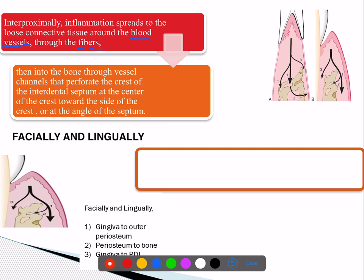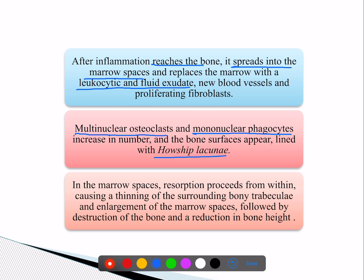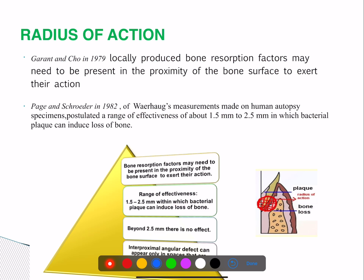The inflammation is transmitted through blood vessels which supply the bone. Once it reaches the bone, it spreads into the marrow spaces and replaces the marrow. The entire healthy marrow is replaced by leukocytic and fluid exudate. Multinuclear osteoclasts and mononuclear phagocytes increase in number and appear lining Howship's lacunae. The marrow spaces resorption proceeds and further thins the trabeculae.